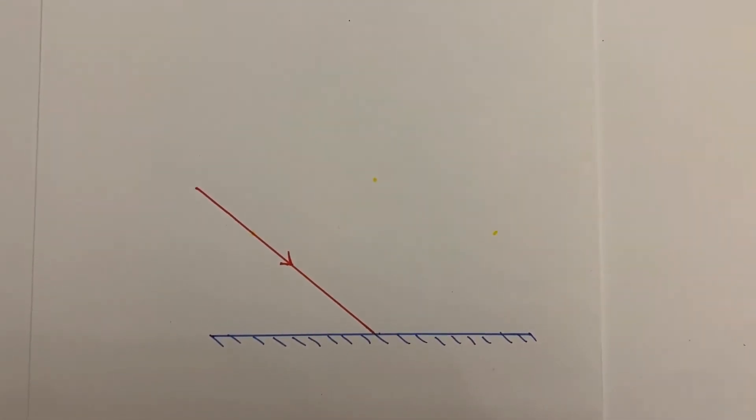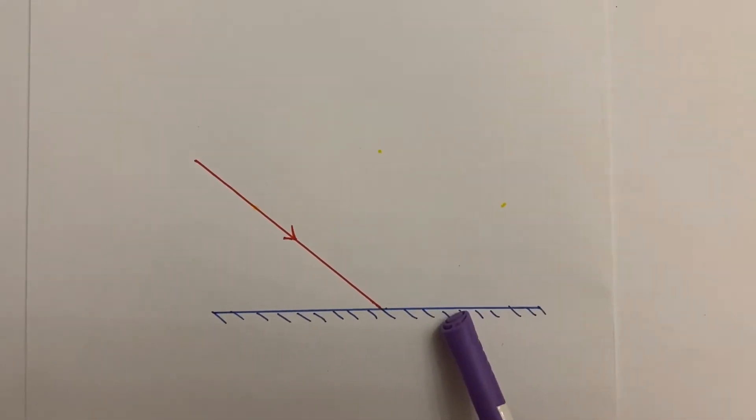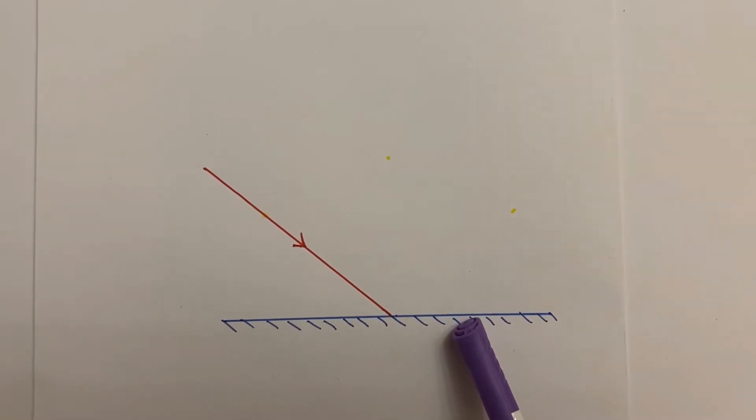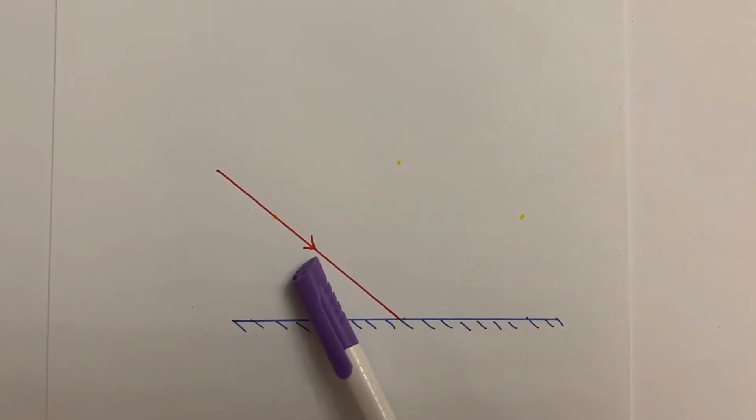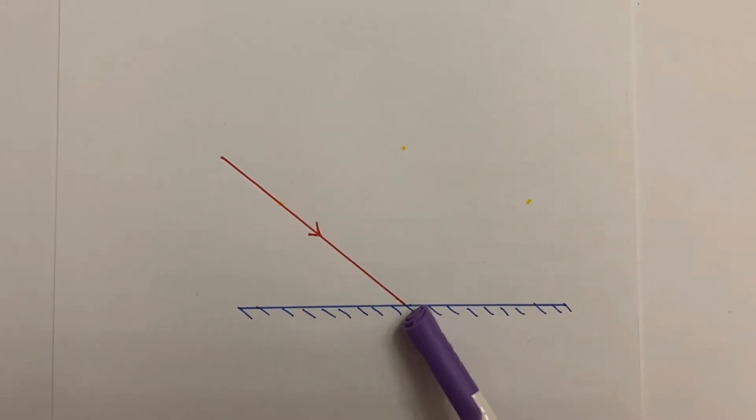So to draw a ray diagram, first step, you have to identify, is the line that's hitting the mirror an incident ray or a reflected ray? And to do that, you look at which way is the arrow pointing. The arrow here is pointing into the mirror, so that means we have the incident ray.